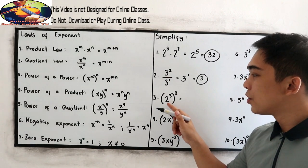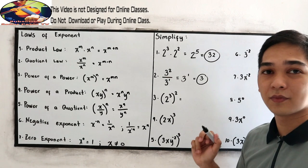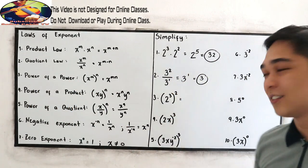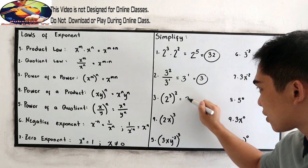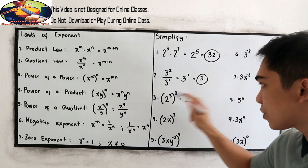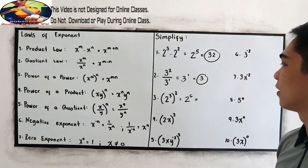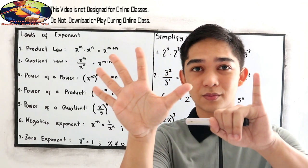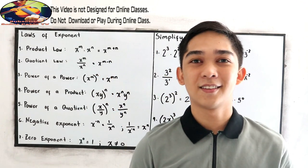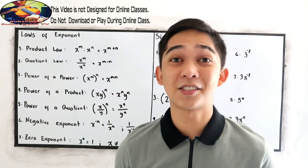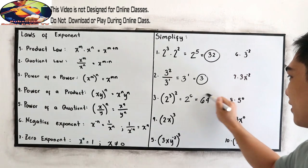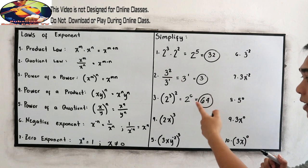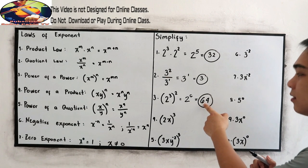Number 3: 2 cubed, raised to 3. This is power of a power. Copy the base, which is 2, then multiply the exponents: 3 times 2 equals 6, giving 2 raised to 6. That is 2 × 2 × 2 × 2 × 2 × 2, which equals 64. Because 2 raised to 5 is 32, times 2 gives 2 raised to 6, which is 64.